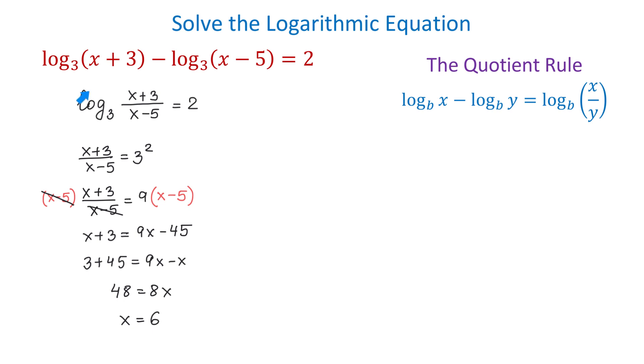In the first logarithm, if we replace x with 6, then 6 plus 3 is positive. And in the second logarithm, if we replace x with 6, 6 minus 5 is also positive. Therefore, now we can say that 6 is the solution.